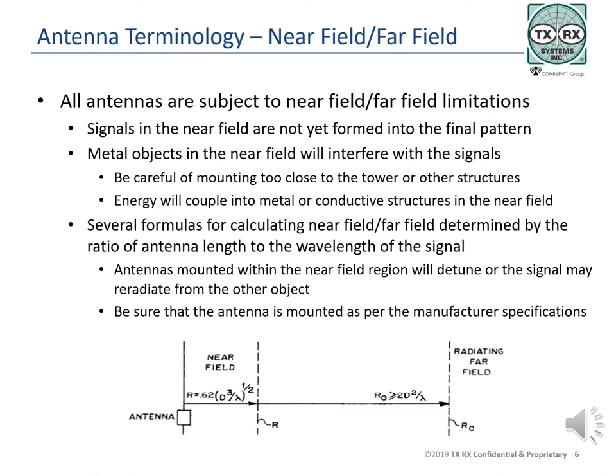Once the signal leaves the near field and enters the far field, it becomes a radiated wave or signal. In the near field of the antenna, coupling back to the antenna and other conductive materials is more of a factor and can significantly impact the power output of the transmission. For antennas that are less than one half of a wavelength — short antennas — the near field is under one wavelength, with the far field being a distance of over two wavelengths.